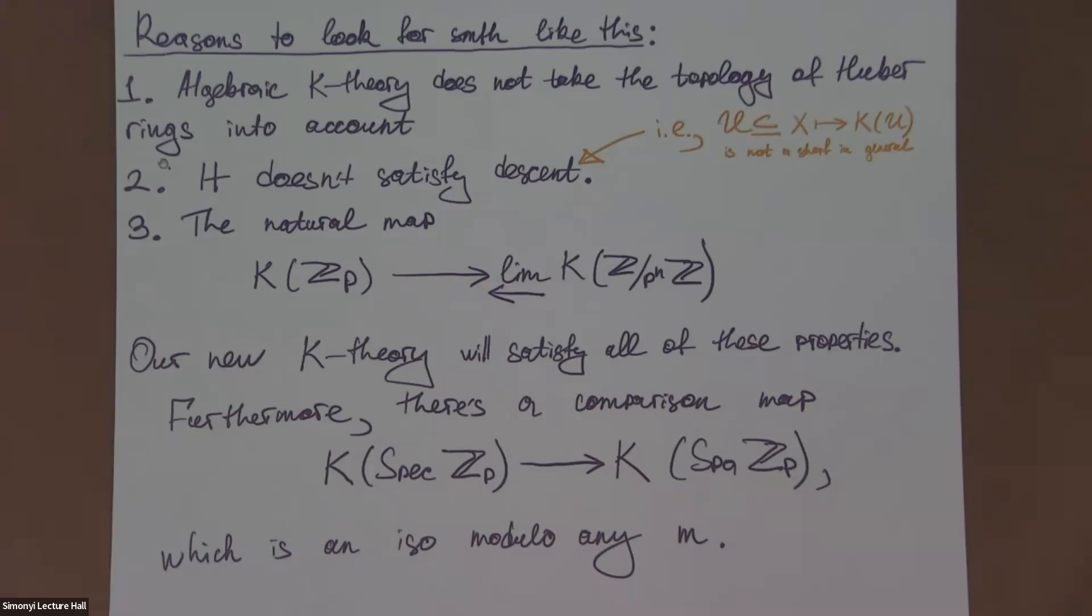P-adic spaces is built in a fashion which is similar to how you build schemes or algebraic varieties. You start with some basic building blocks, which in the case of algebraic geometry correspond to rings, and here they correspond to a certain class of topological rings. The second reason is it does not satisfy descent. How can you relate global K-theory on a geometric object to local K-theories? If you take U, an open subset of X, and send it to K of U, then this guy is not a sheaf in general. By K U, I mean algebraic K-theory.